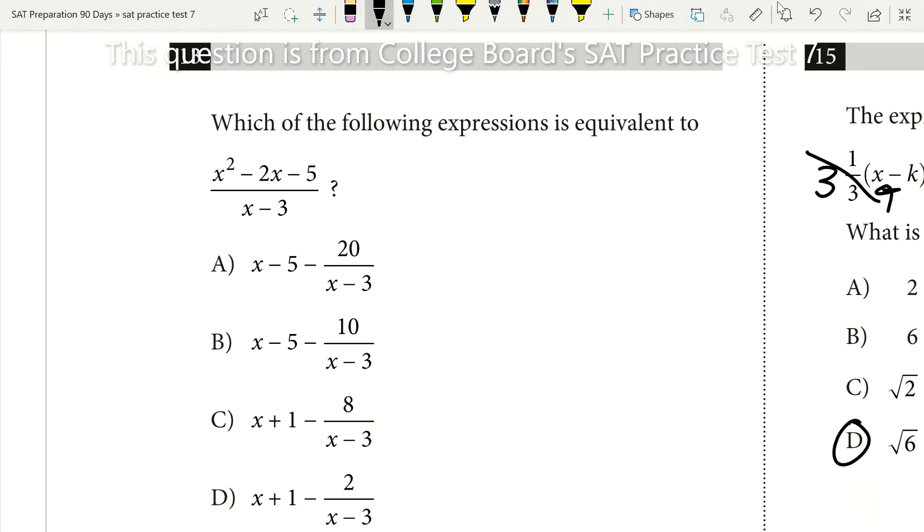Here's an SAT math trick you can use to solve this problem. It says which of the following expressions is equivalent to x squared minus 2x minus 5 over x minus 3?